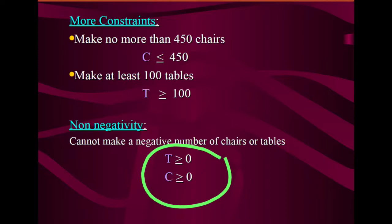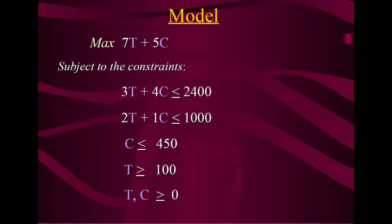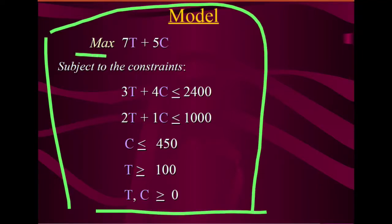Writing everything in an orderly fashion as a model: Maximize Z = 7T + 5C, subject to the constraints: 3T + 4C ≤ 2,400; 2T + C ≤ 1,000; C ≤ 450; T ≥ 100; and T, C ≥ 0. This is how we write a complete LPP model with the objective function and all constraints on one page.